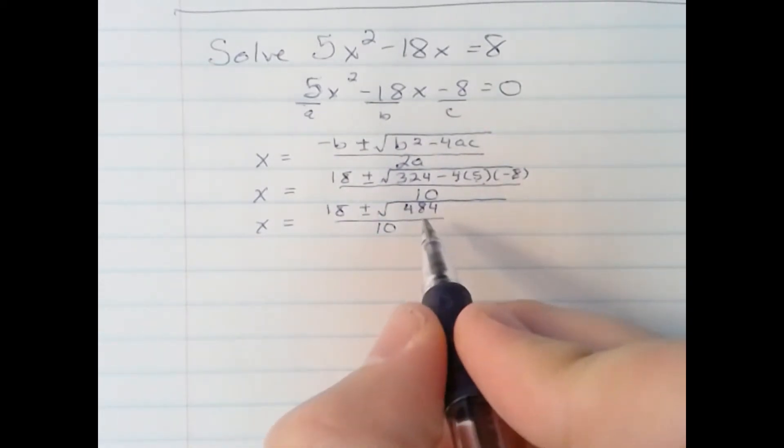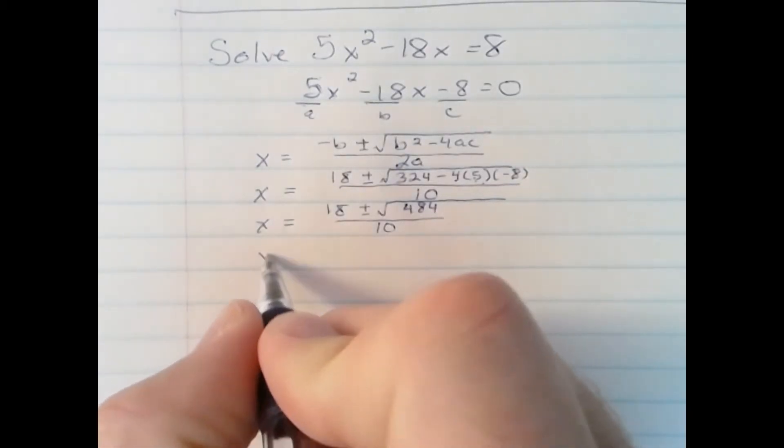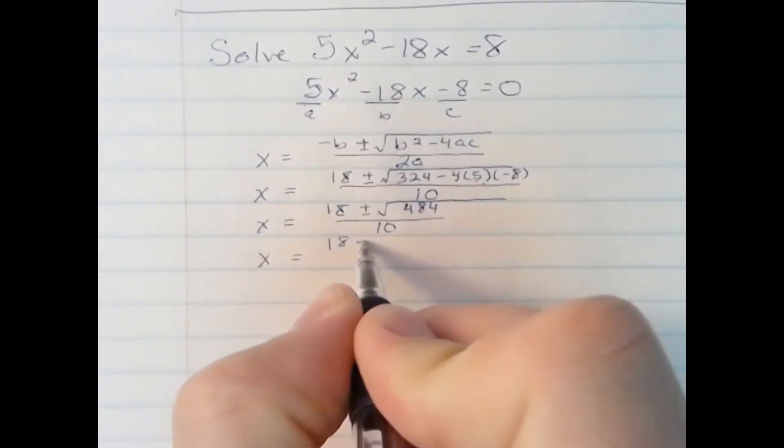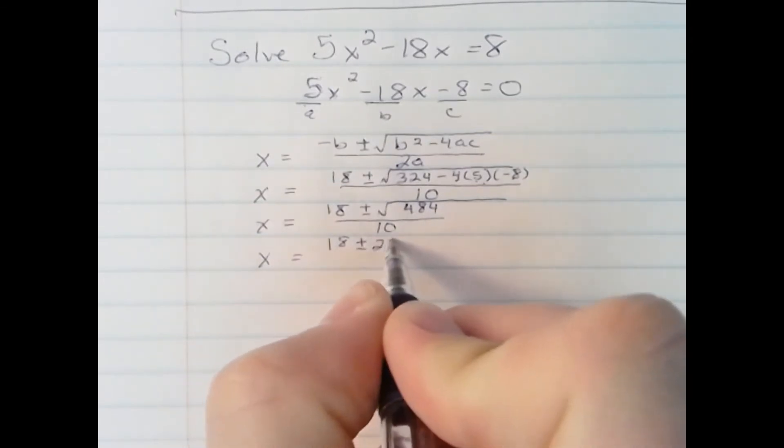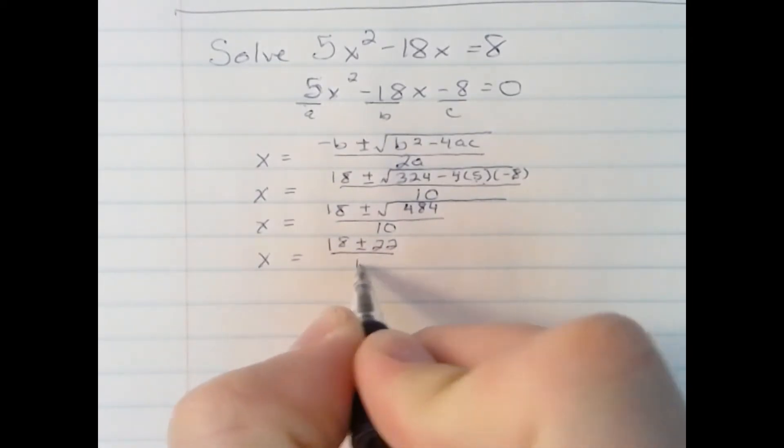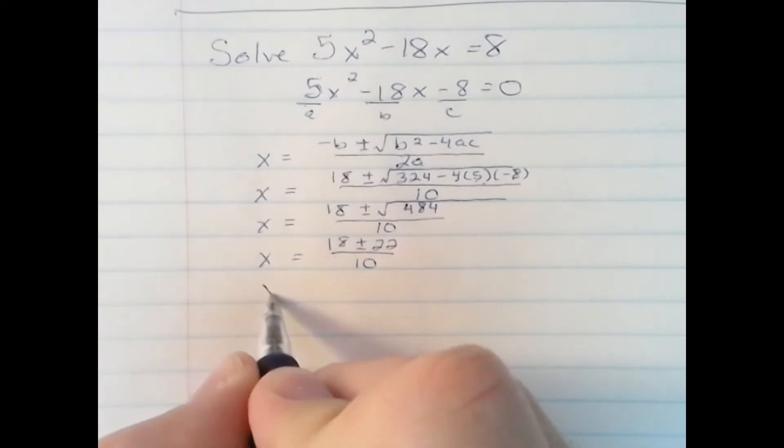484 is a perfect square. The square root of 484 is 22. 18 plus or minus 22, all over 10. Let's simplify that further.